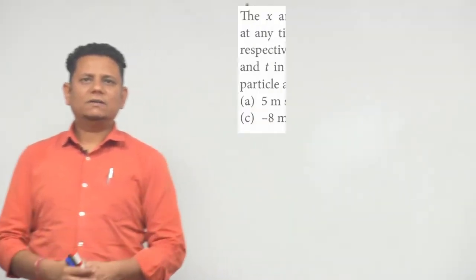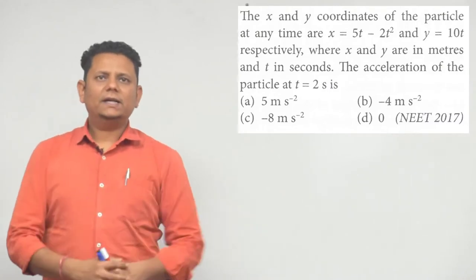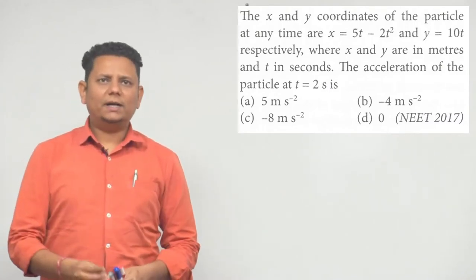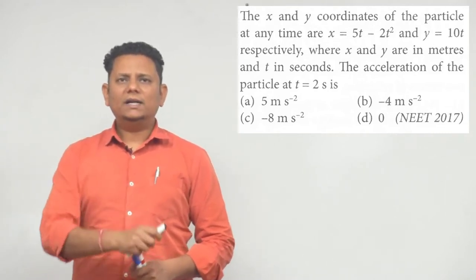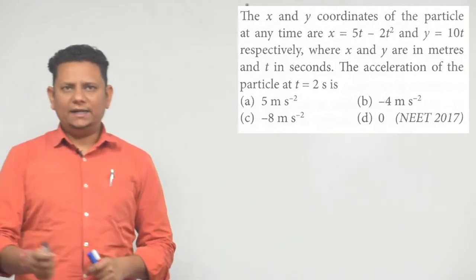All right, next question. The question is that the x and y coordinates of a particle at any point in time are given as x equals 5t minus 2t square and y equals 10t respectively.